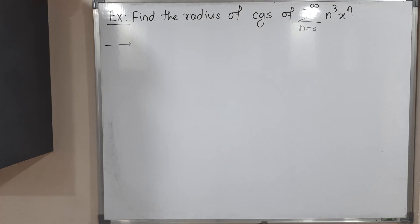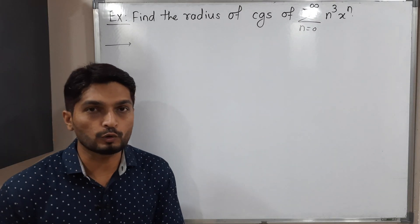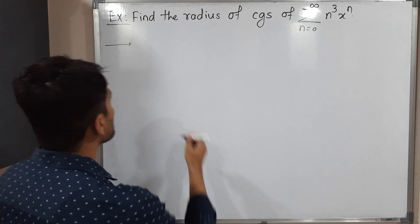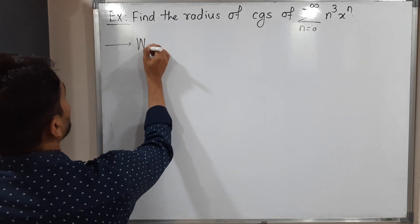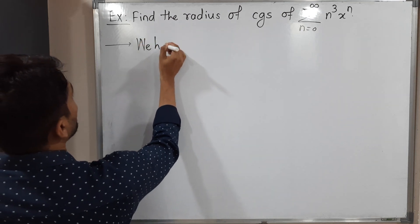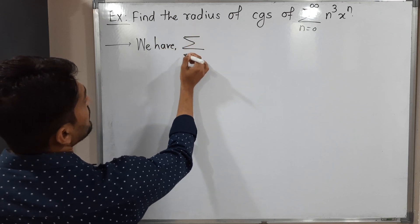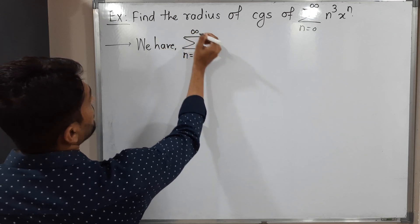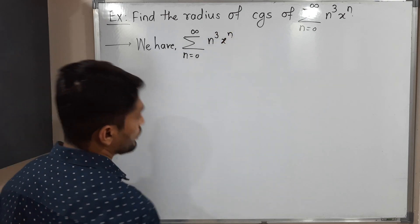Hi everyone. In this video we are going to find the radius of convergence of two power series. Our first power series is the summation with n running from 0 to infinity of n cubed times x raised to n.